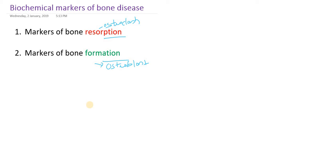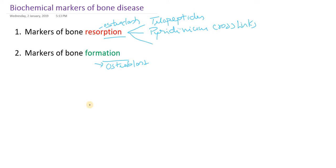Coming to the markers of bone resorption - 99% of bone matrix is made up of collagen and non-collagen protein. The 99% of collagen protein is type 1 collagen. When bone is continuously resorbed in any disease, collagen will be degraded. The products of collagen can be measured in both serum and urine - these are telopeptides, pyridinium crosslinks, and hydroxyproline.